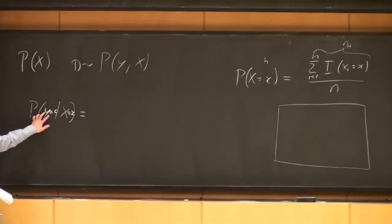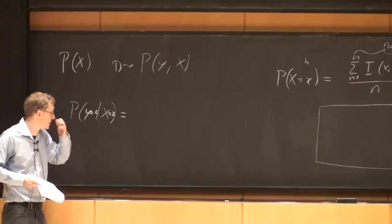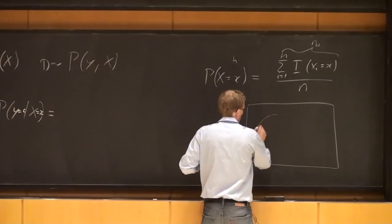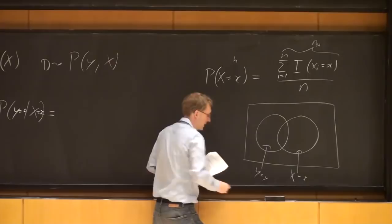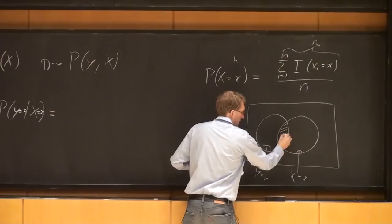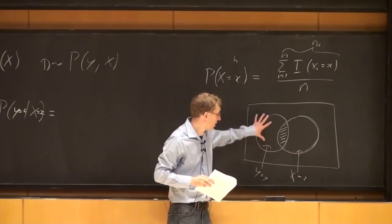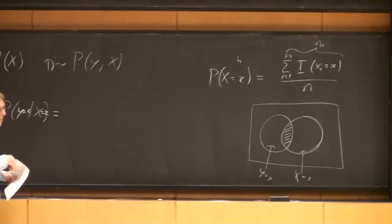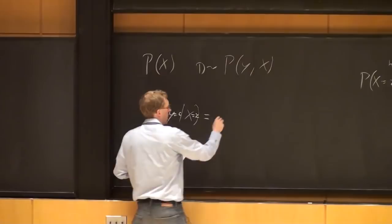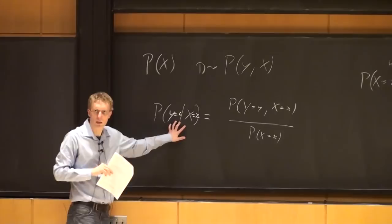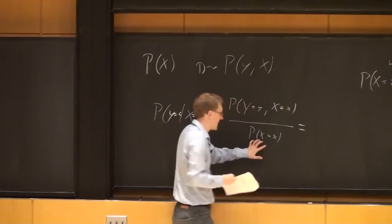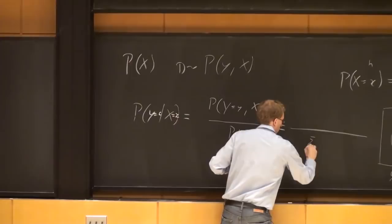So we have a bunch of data, and we want to know: what fraction of times we have class label y — but only within the subset where x equals little_x. Another way to look at it: it's a Venn diagram. We have the set where x equals x, and the set where y equals y. We're interested in the intersection of those circles, out of the circle where x equals x. By definition, P(y=y | x=x) = P(y=y, x=x) / P(x=x).